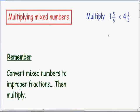Welcome to my video on multiplying mixed numbers. Here we have 1 and 5/6 being multiplied with 4 and 1/2. The first thing that we want to do — and I wrote this for you in green — is we want to convert the mixed numbers into improper fractions, then we want to multiply. So let's start off by doing that.